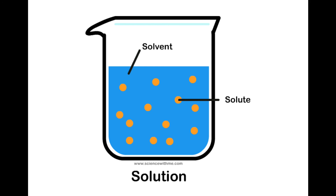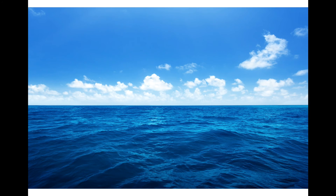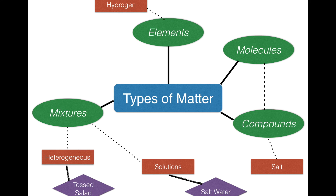What you usually have is a solid dropped into a solvent that falls apart and ends up spread out evenly in a solution. Solutions are uniform in their composition — the substances are evenly spread out. Seawater is an example of a solution. Salt and other substances are dissolved in the water so evenly it's not easy to remove them. If we scoop out a scoop of seawater and then another scoop somewhere else, the salt and other substances will be spread out nice and uniformly — we can't find big chunks of salt floating around in the water.